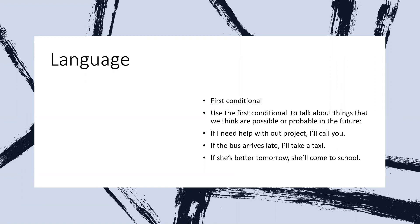And then we have the first conditional. We use it to talk about things that we think are possible or probable in the future — things that might happen in the future. For example: 'If I need help with our project, I'll call you.' Next: 'If the bus arrives late, I'll take a taxi.' And: 'If she's better tomorrow, she'll come to school.' These are all examples about things that might be possible in the future — there's a possibility that they will happen.